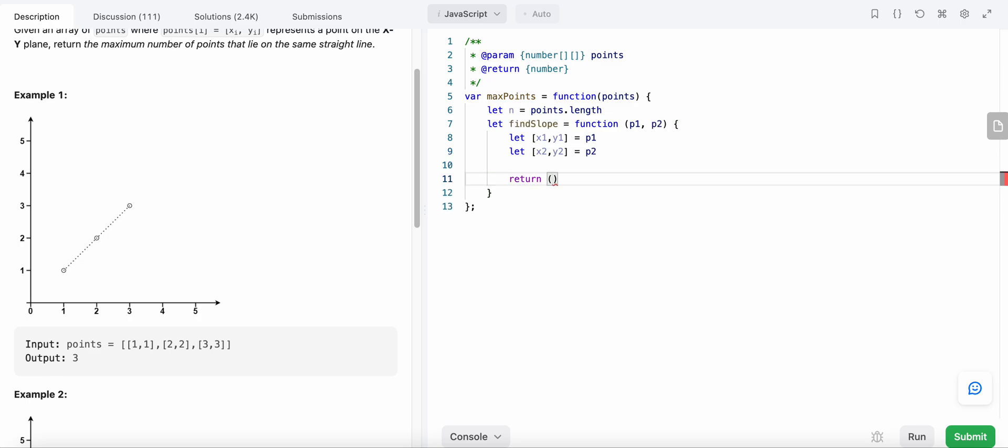would return our slope, that is y2 minus y1 divided by x2 minus x1. This is our slope that will return. Now we will iterate over each of the points. We will create a new map each time, and let p1 equal